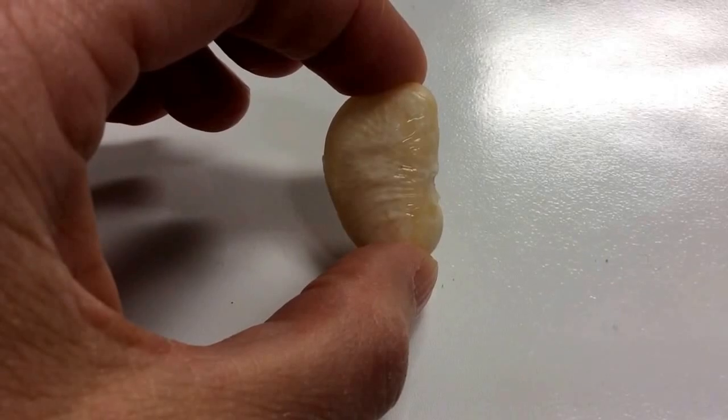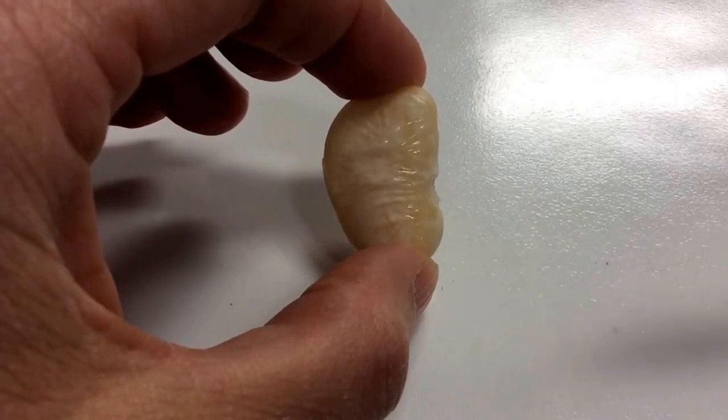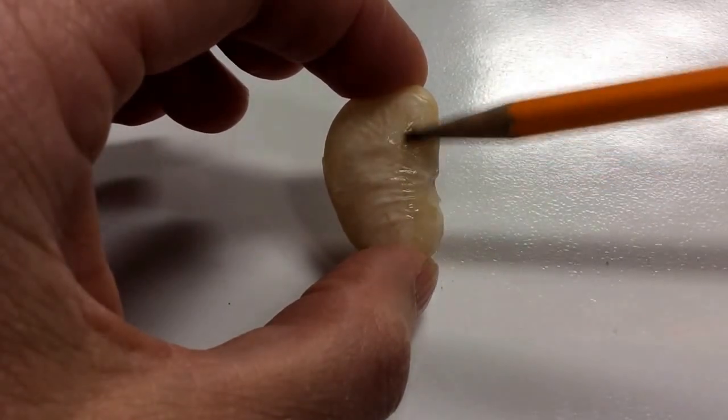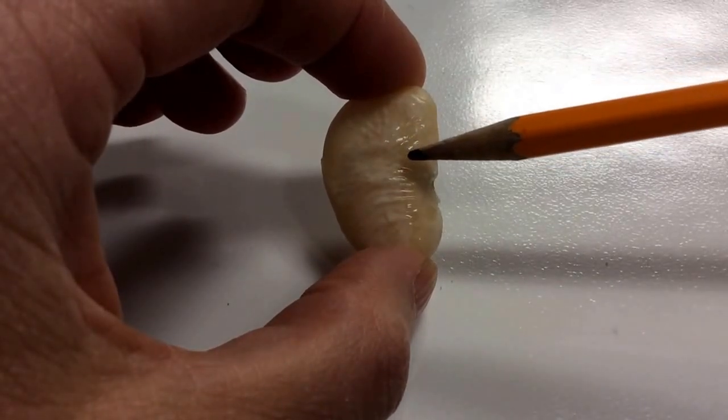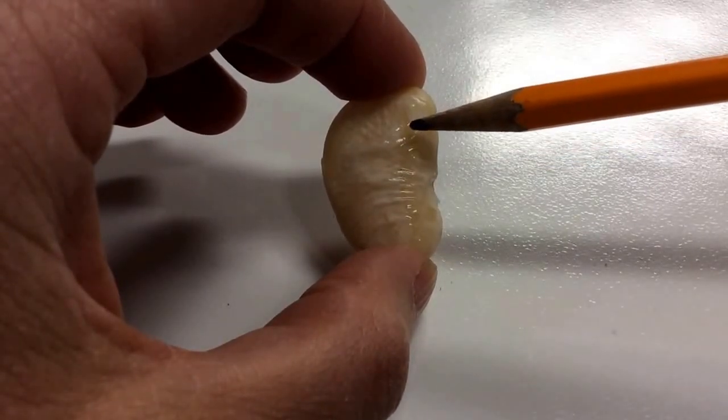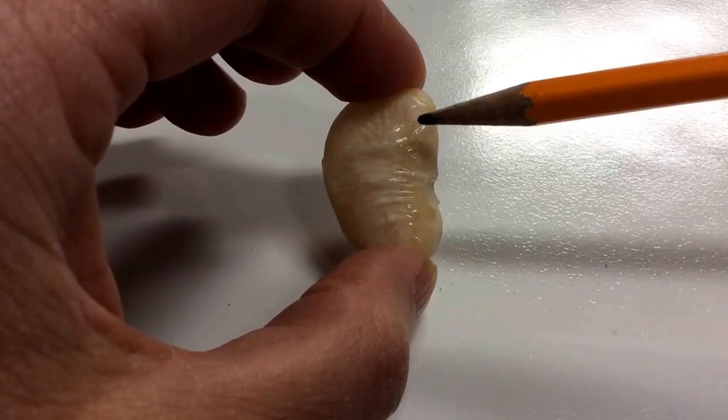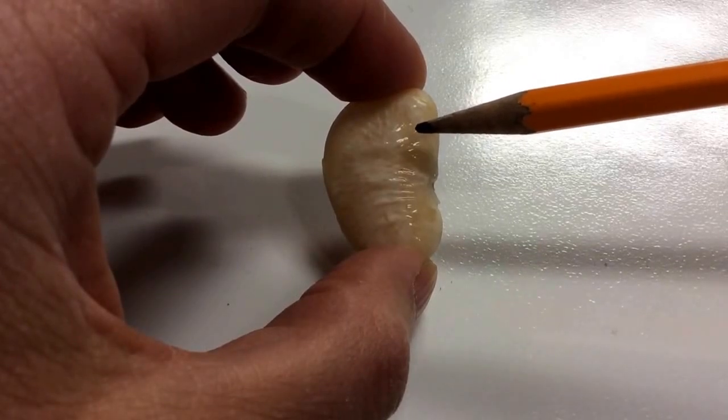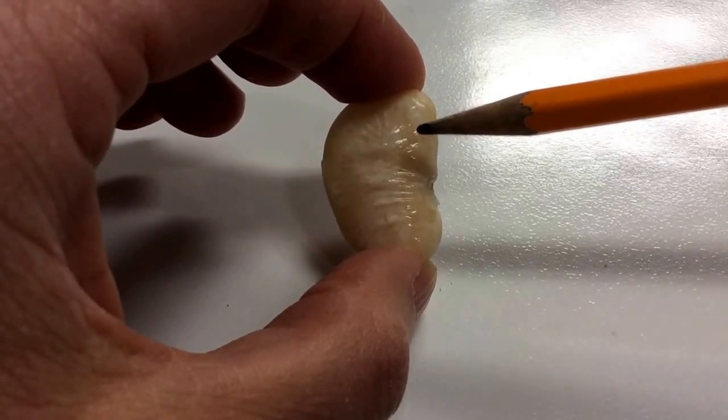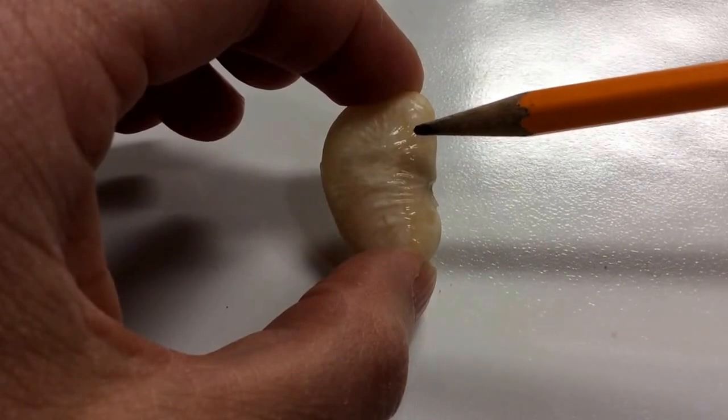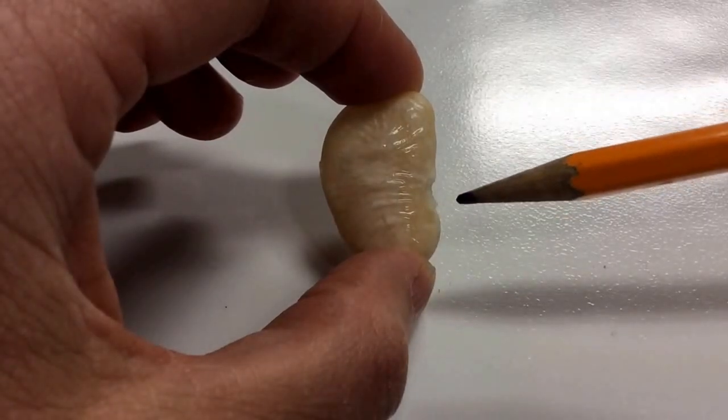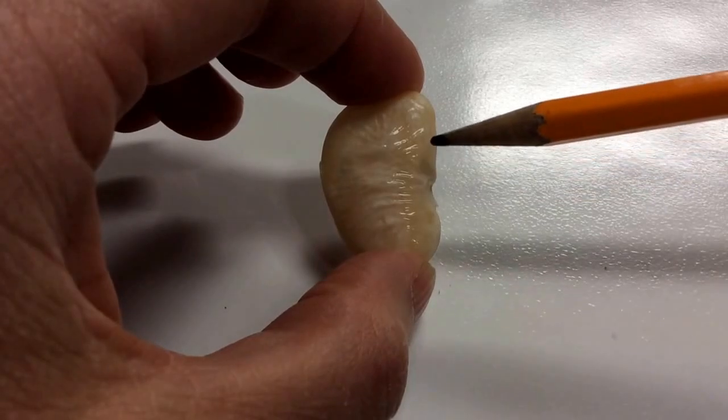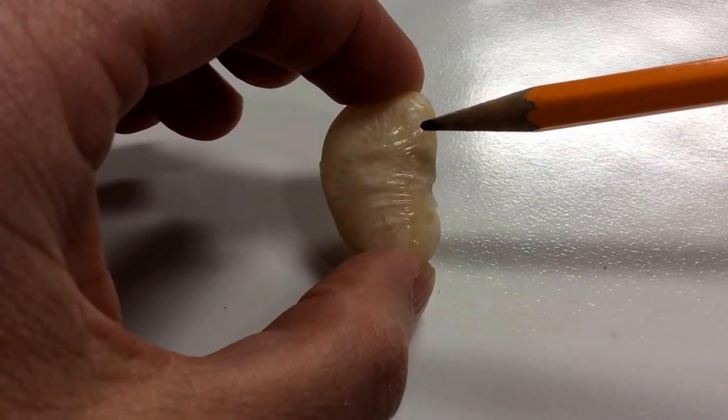The first thing you might notice about this lima bean is this little flaky stuff on the outside of the bean. Some of you might have even had it already fall off and that's because it's been soaking in water so it makes that flaky stuff a little bit weaker than it was. Can anybody tell me what this flaky layer is on the outside of the bean? That's right, it's the seed coat and the seed coat helps to protect the lima bean from the environment.